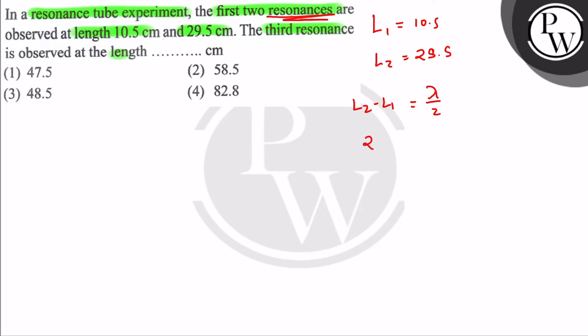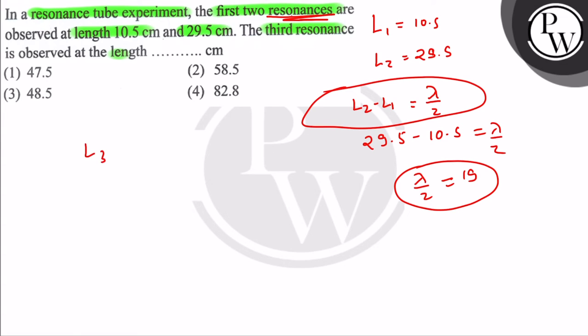Here L₂ value 29.5 and L₁ value 10.5 is equal to λ/2. Here we get λ/2 = 19. Now we use this concept, we go to third resonance. We go to L₃ - L₁ is equal to λ/2.